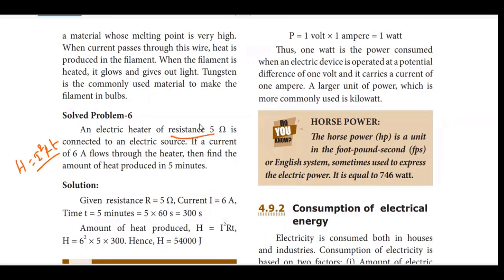Resistance is 5 ohm. Current is 6 ampere. Time is 5 minutes. If we take the calculations in seconds, let's go to seconds. That's why we convert 5 into seconds. 5 into 60 is equal to 300 seconds. Now, amount of heat produced, the value of H. H is equal to I squared. Current is 6.